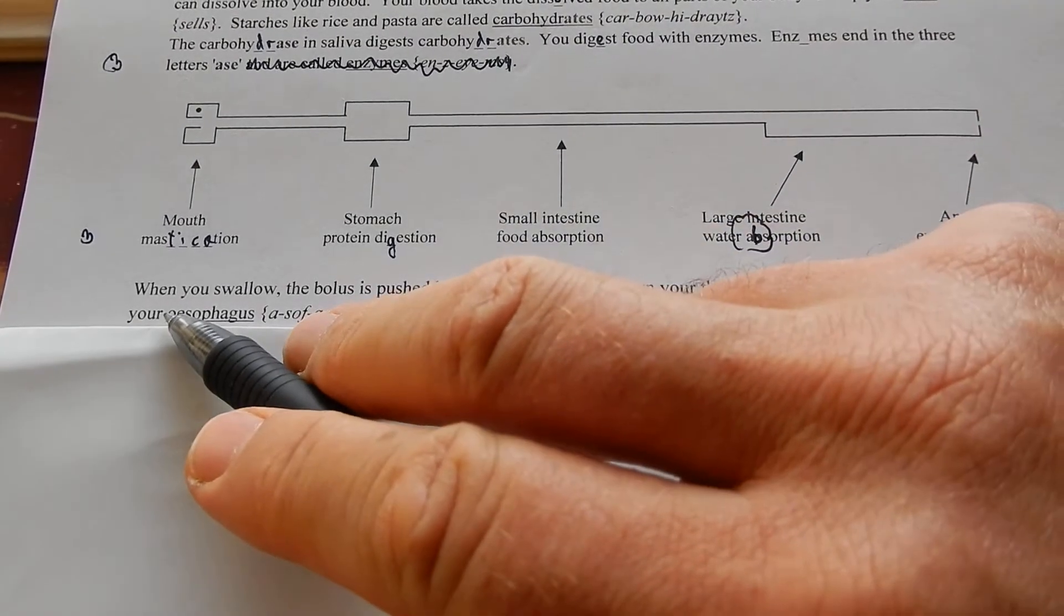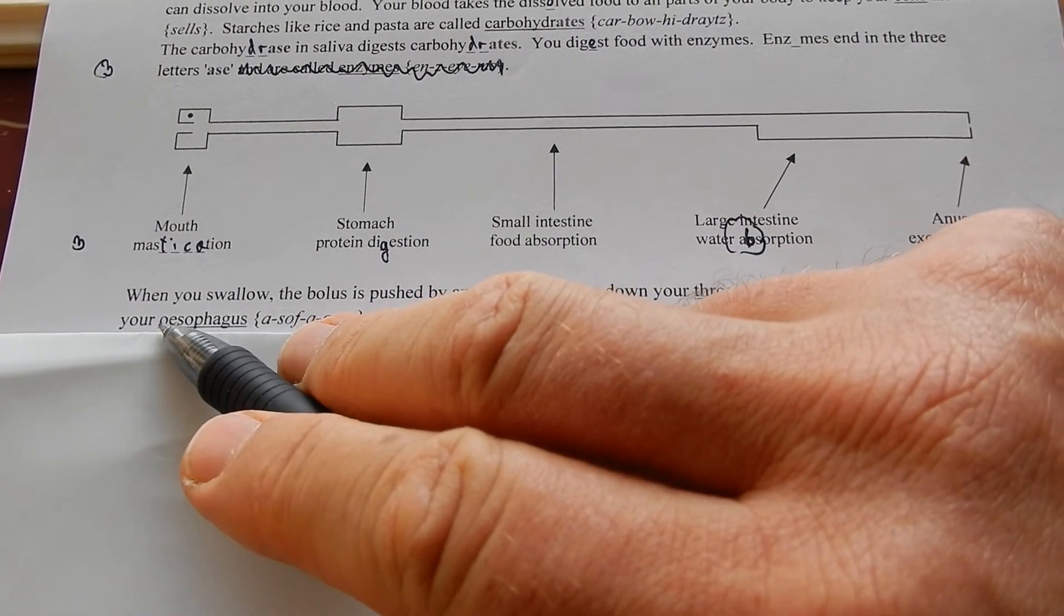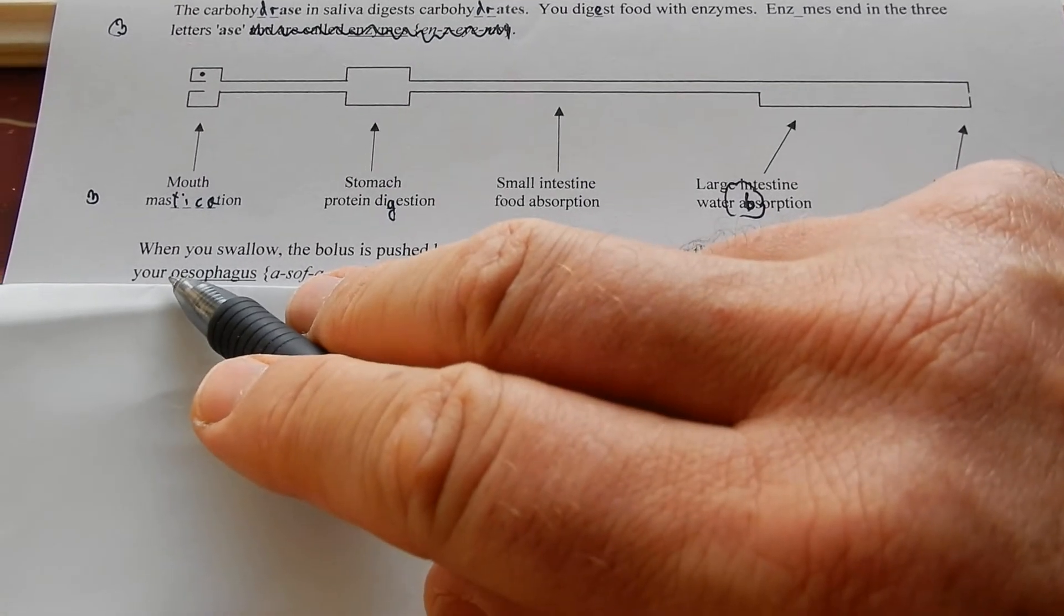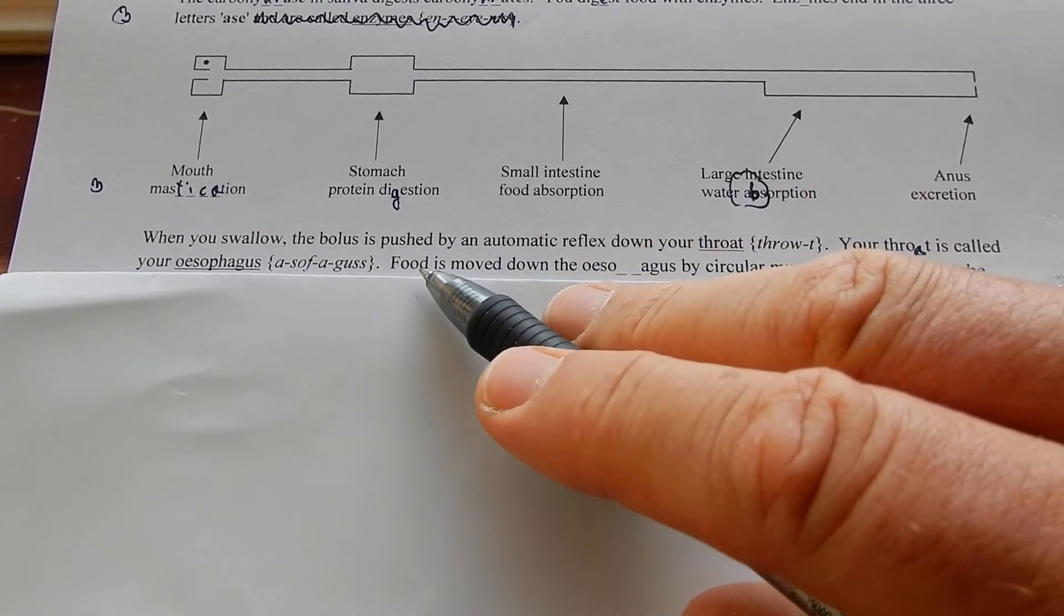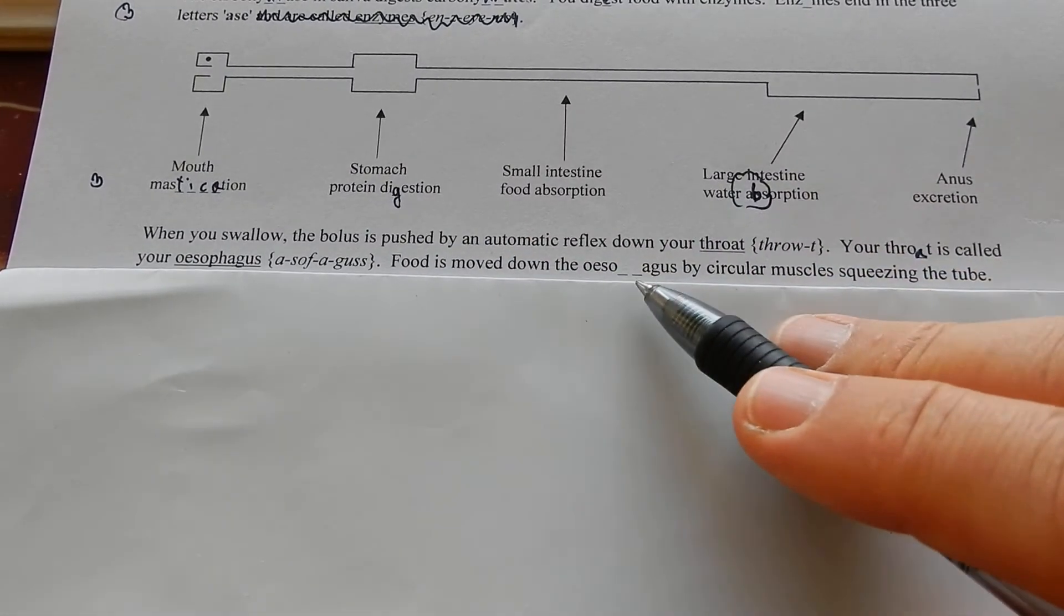American spelling has no O at the beginning. They leave out the silent O and just say esophagus. Food is moved down the esophagus.